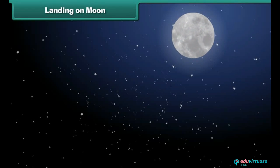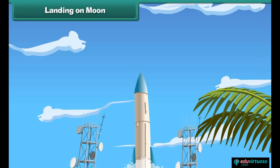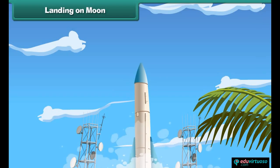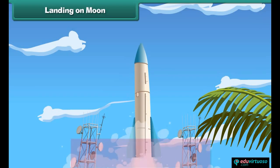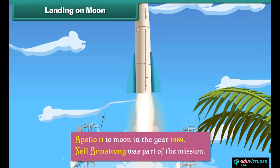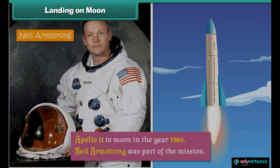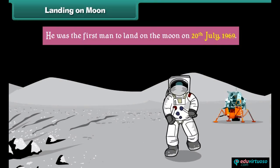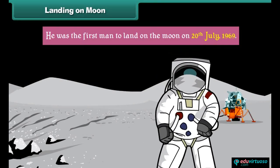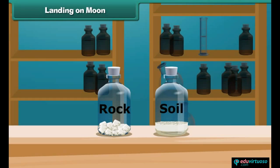Landing on the Moon: even though life is impossible on the Moon, it continues to fascinate scientists. They sent a mission called Apollo 11 to the Moon in the year 1969. Neil Armstrong was part of the mission and was the first man to land on the Moon on 20th July 1969. He performed various experiments on the Moon and brought back samples of soil and rock.